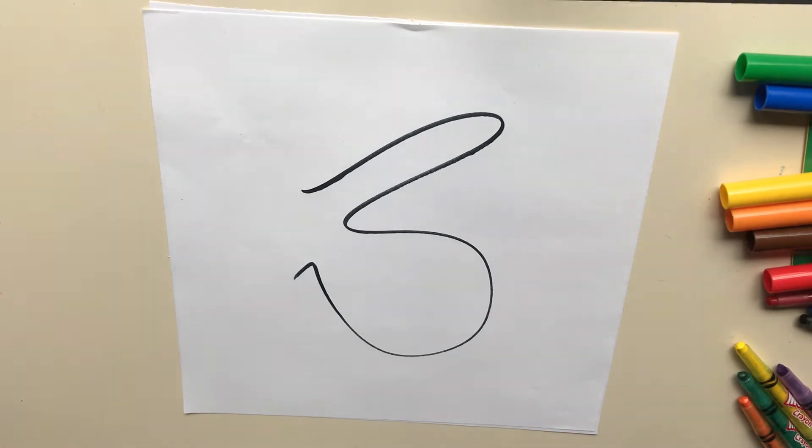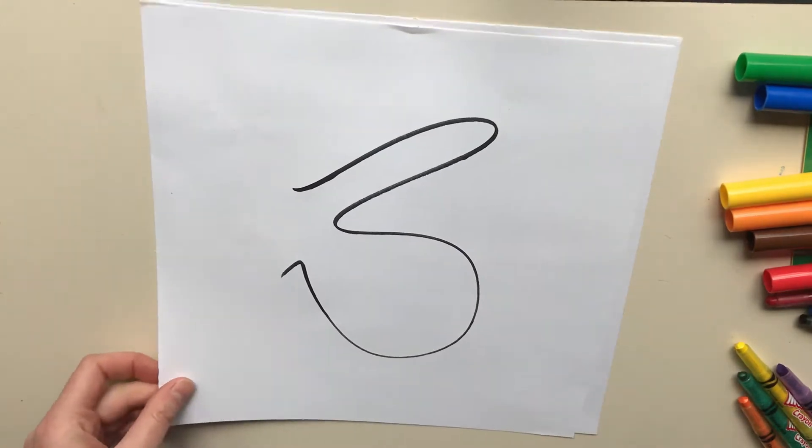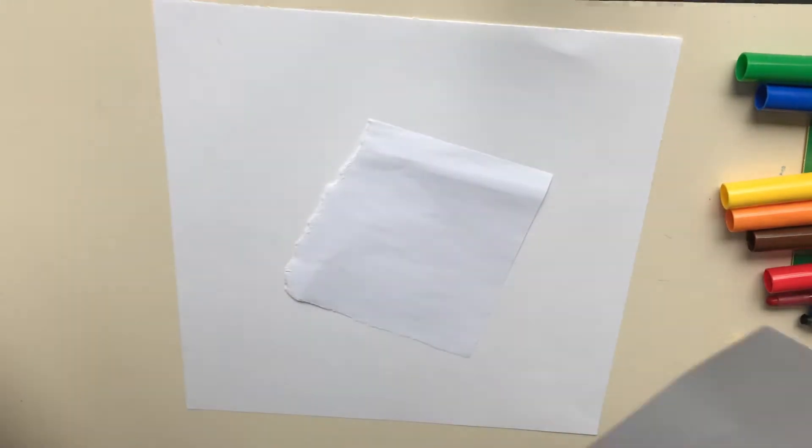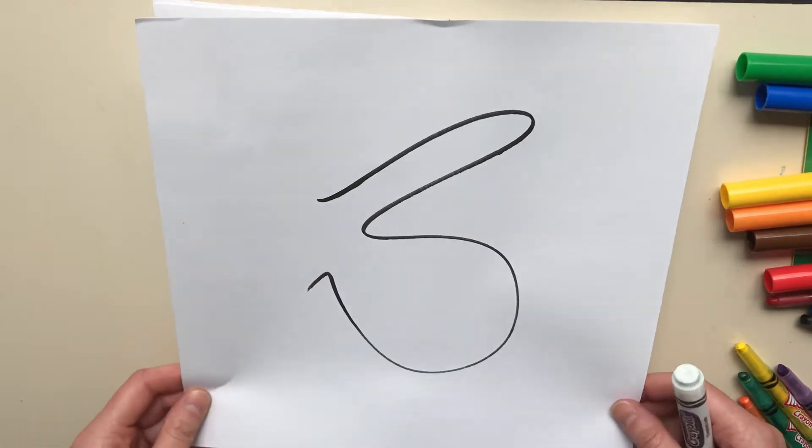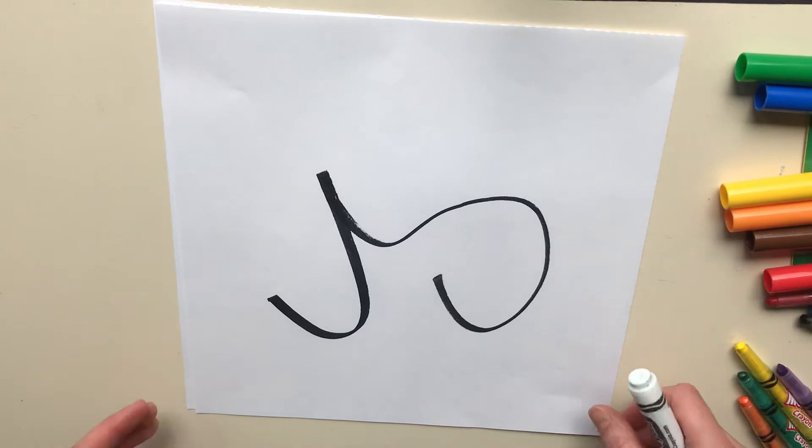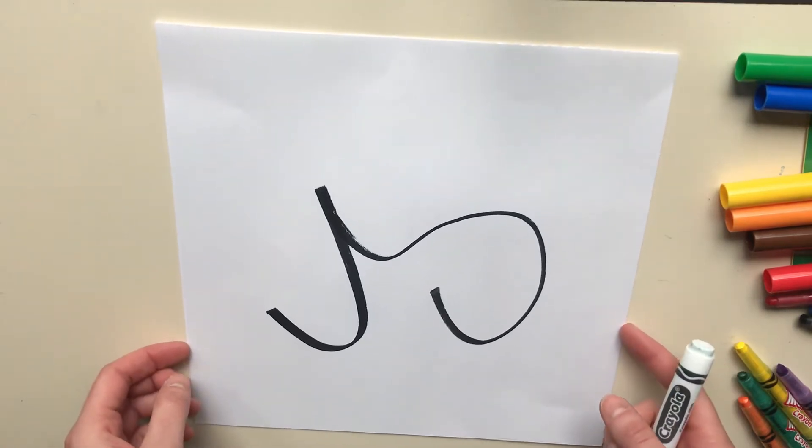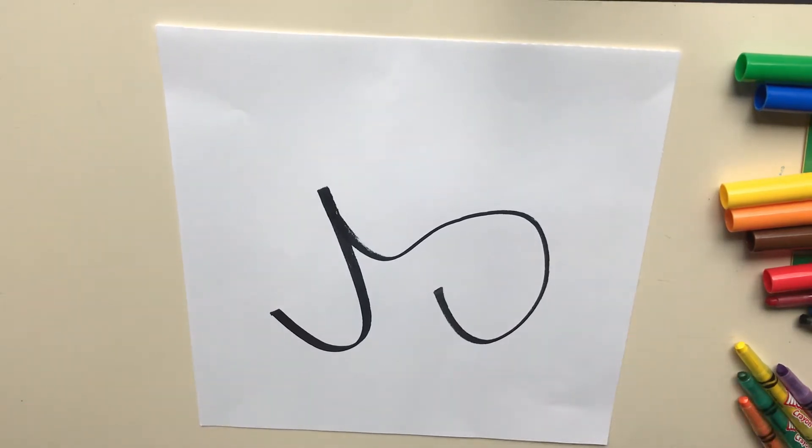And then what you do is if you're playing with someone else you're going to switch papers with them. But if you're playing by yourself you'll just keep your own paper. So what you do is after you switch papers or after you're done with your scribble then you're gonna start looking at it from different ways and thinking about what could I turn this scribble into? Because right now it's not anything. But what can I use my imagination to turn it into?